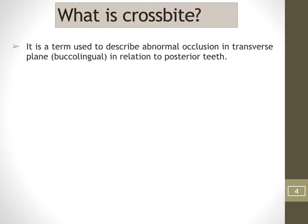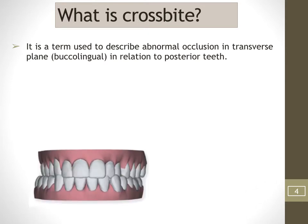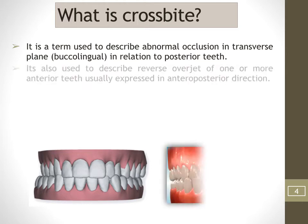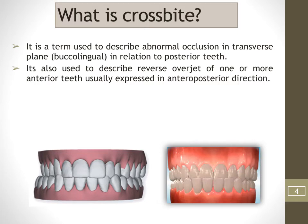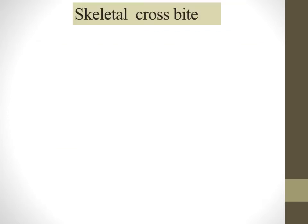Crossbite is a malocclusion in a transverse plane. Normally it is the maxillary teeth which should be outside compared to the mandible, placed buccally or labially. If you have an opposite relationship, we call it a crossbite. This can be a posterior crossbite, or you can have a reverse overjet where mandibular anteriors are labially present — that is an anterior crossbite.